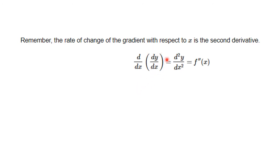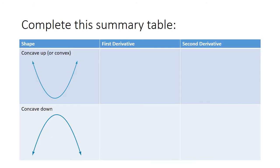So if we have dy/dx, this is the derivative. If we differentiate the derivative with respect to x, we get d²y/dx², or f double-dash of x, or y double-dash. Looking at the top graph which is concaving up, the gradient is quite steep but very negative, steeping in the negative direction — very negative to less negative to zero, then positive and very positive.